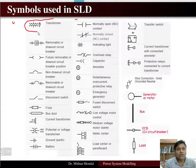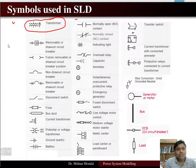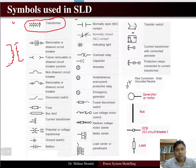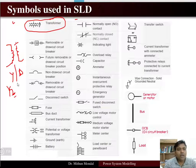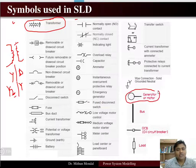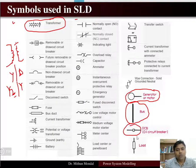The symbols used in a single line diagram include: a transformer represented by two inductors showing primary and secondary circuits, with star, delta, or grounded-star connections indicated. A generator or motor is represented by a circle with G or M written inside. The bus is represented by a thick horizontal or vertical line. A circuit breaker is represented by a small rectangle, and a load by a larger rectangle.